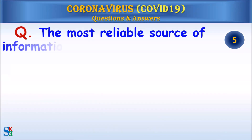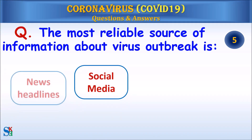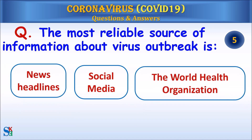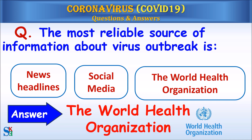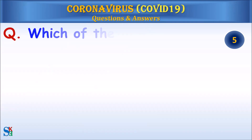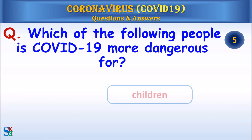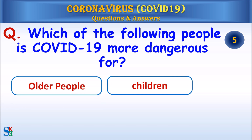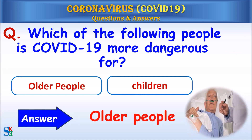Question: The most reliable source of information about a virus outbreak is — news headlines, social media, or the World Health Organization? Answer: The World Health Organization. Question: Which of the following people is COVID-19 more dangerous for — older people or children? Answer: Older people.